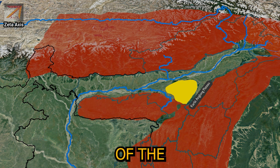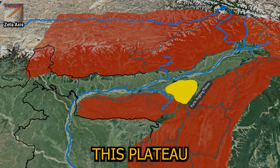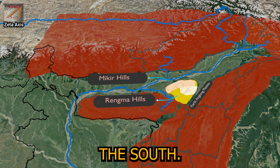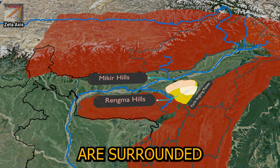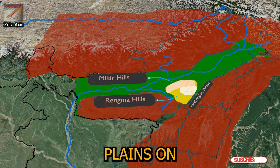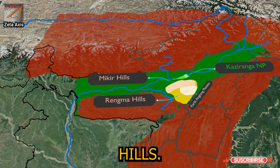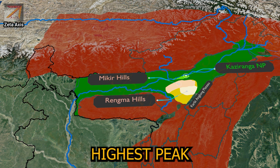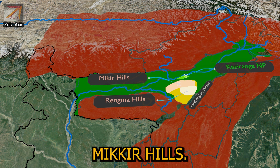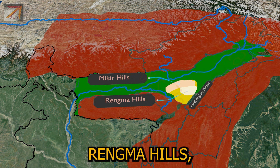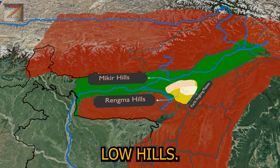A further eastward extension of the Shillong Plateau is called the Karbi Anglong Plateau. This plateau has Mikir hills in the north and Rengma hills in the south. The Mikir hills are surrounded by the Brahmaputra plain on three sides. Kaziranga National Park is located to the north of Mikir hills. Dambukcho is the highest peak of the Mikir hills. The southern part of the Karbi Anglong Plateau, called Rengma hills, is a series of low hills.